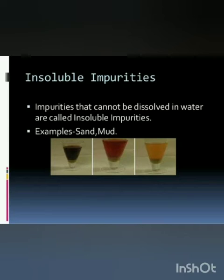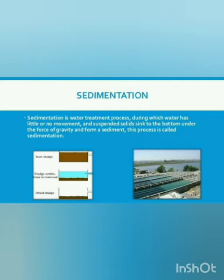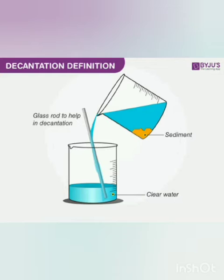Paani mein germs bhi, jaraseem bhi ho sakte hain. Insoluble impurities jo paani mein hain unko hum alag kar sakte hain paani se bahut saare methods se. Toh yahan pe aaj ki book pe 3 methods diye gaye hain jin se hum insoluble impurities ko alag kar sakein. Sedimentation, decantation, filtration. Sab se pehle hum sedimentation ke baare mein padhenge. Sedimentation woh process hai jis mein heavy insoluble impurities jo paani mein hal nahi hoti woh neeche settle ho jaati hai. Is method se hum sand alag kar sakte hain paani se.